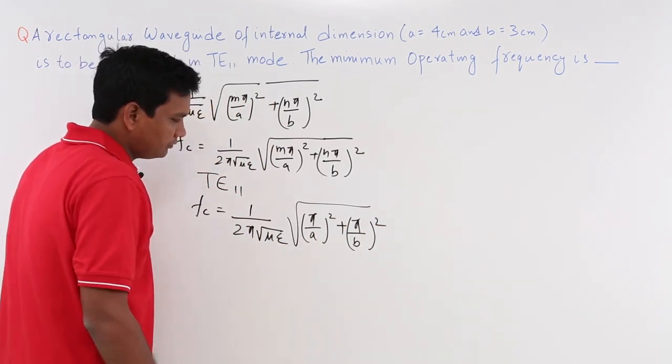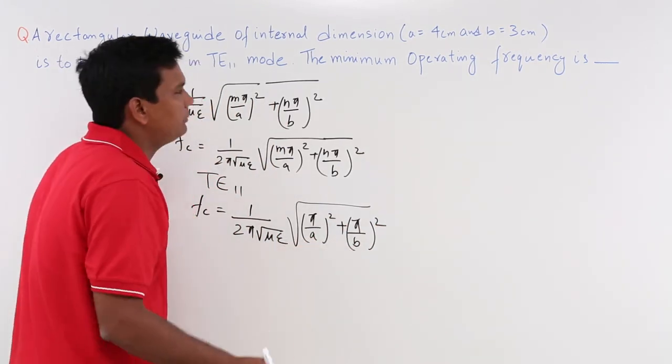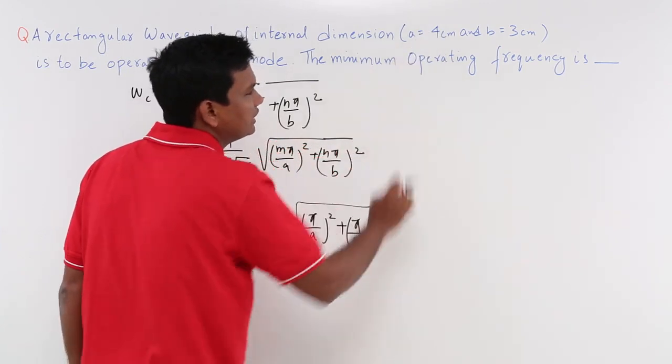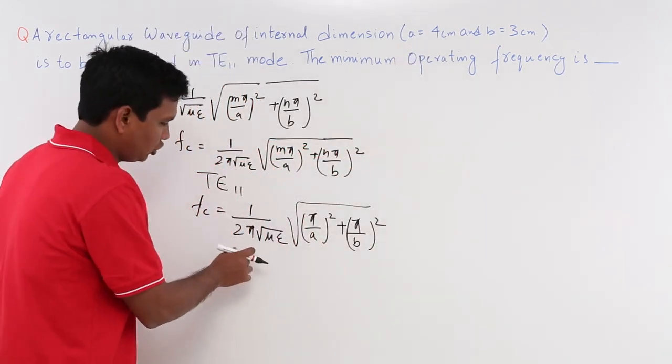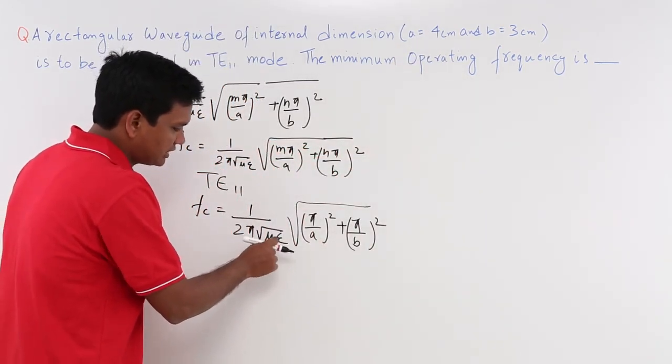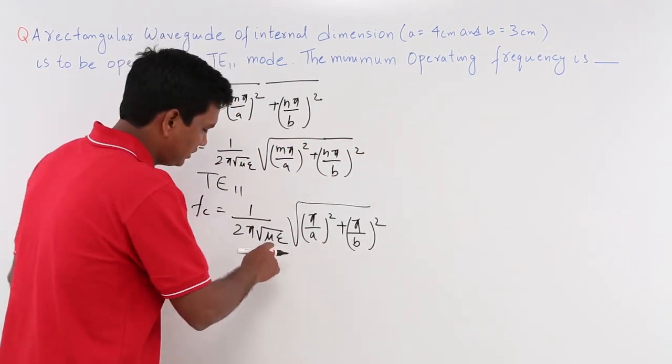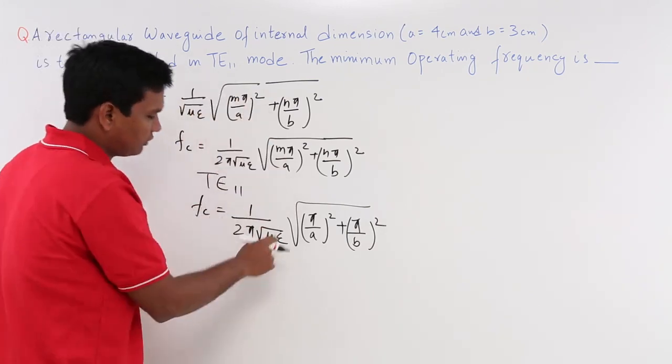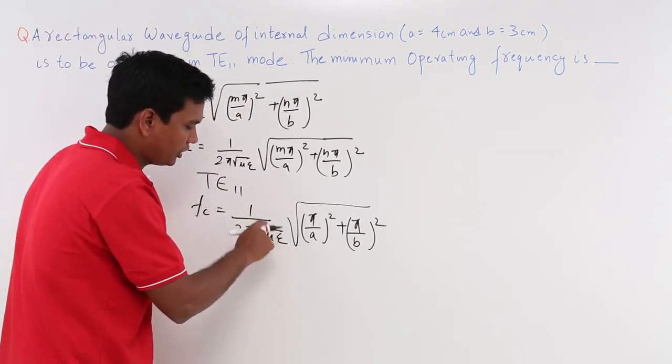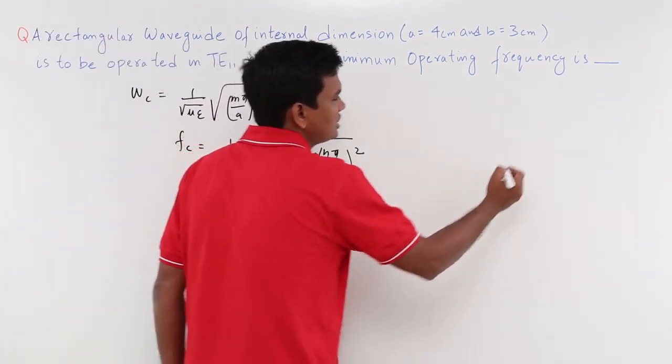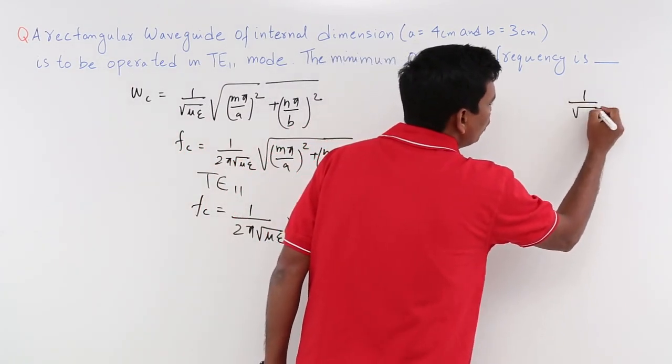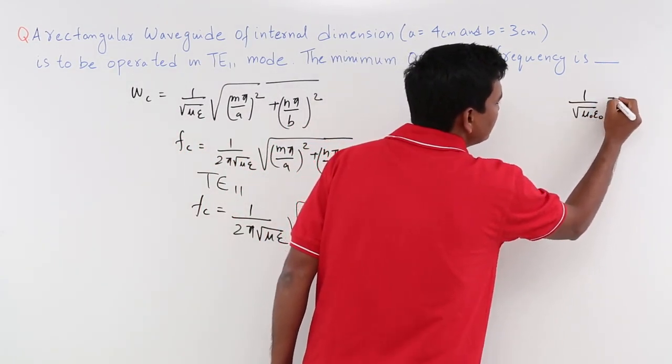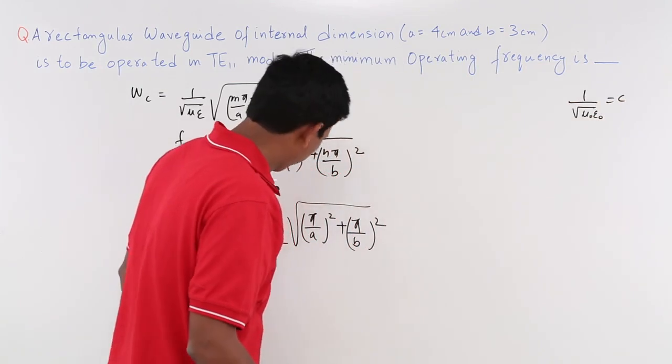A and B is given to us, length and breadth is already given. So mu naught epsilon naught is your c. When you are talking about a rectangular waveguide, I will take mu naught and epsilon naught, and 1 by root over mu naught epsilon naught is equal to c. So I will use that.